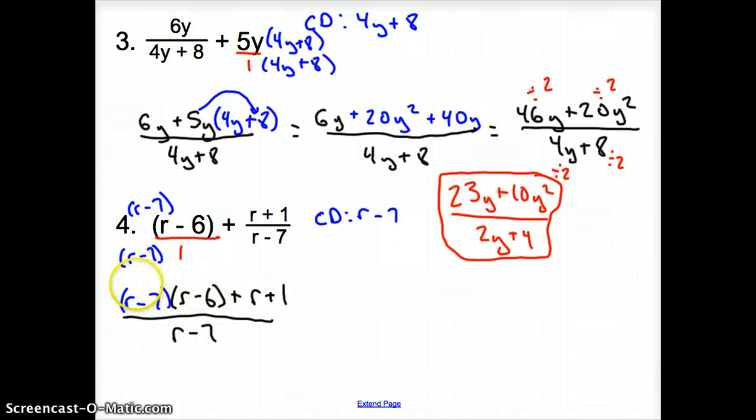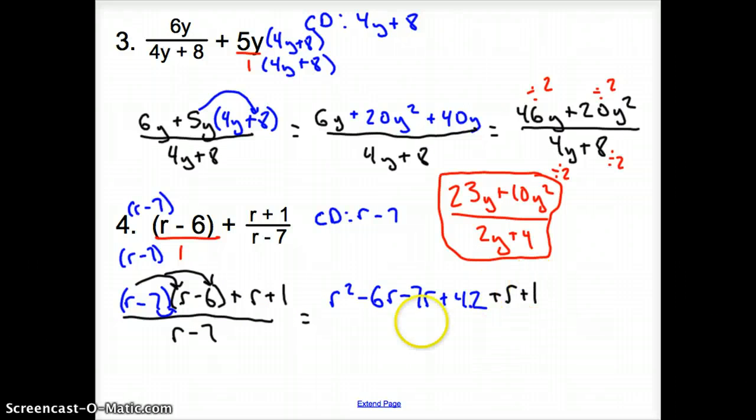So, now, if we distribute this stuff here times here, we come up with an R squared minus 6R. And, then, we have to go here with it. So, it's minus 7R plus 42. And, then, we have what's left over here. So, that's plus R plus 1. And, what's that go over? R minus 7.